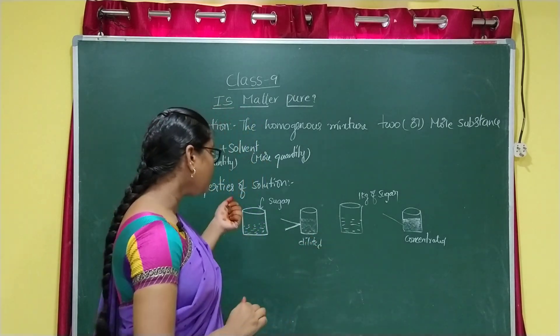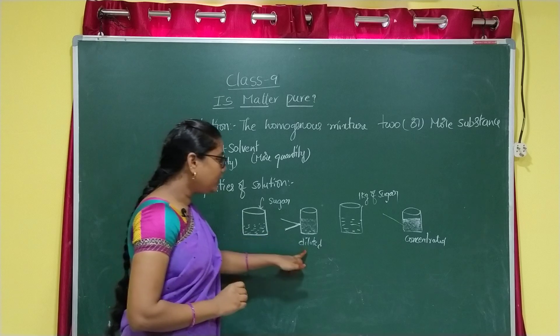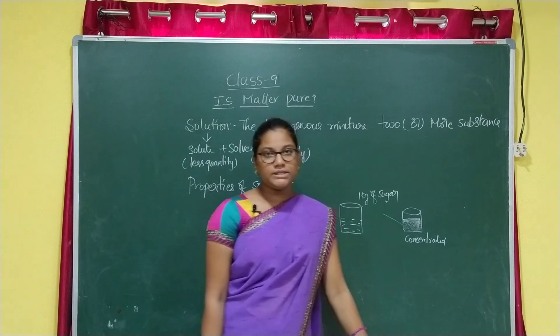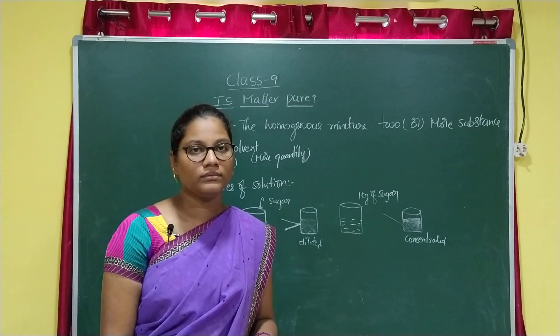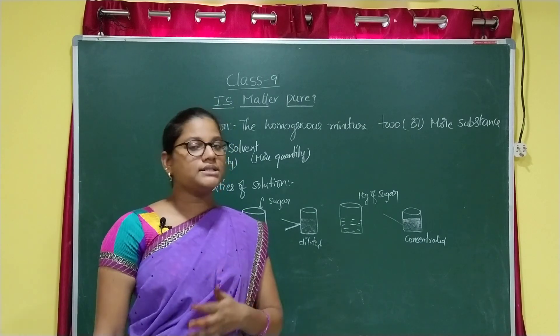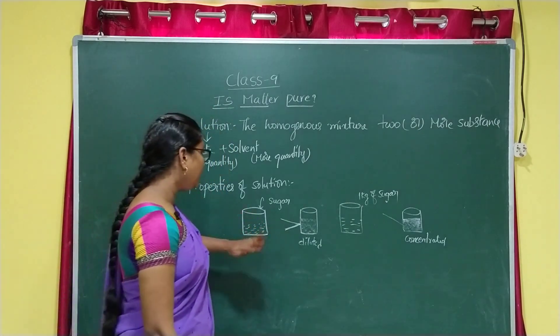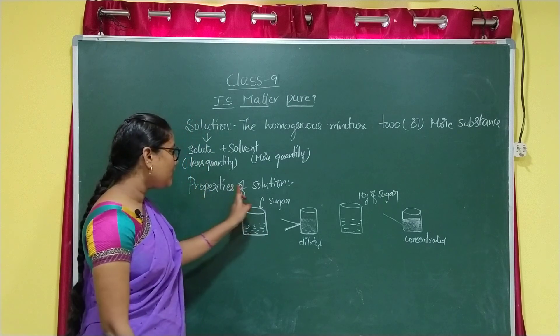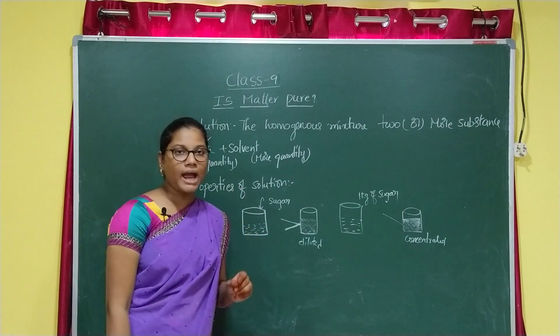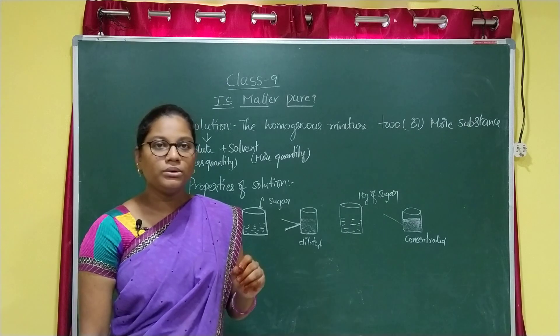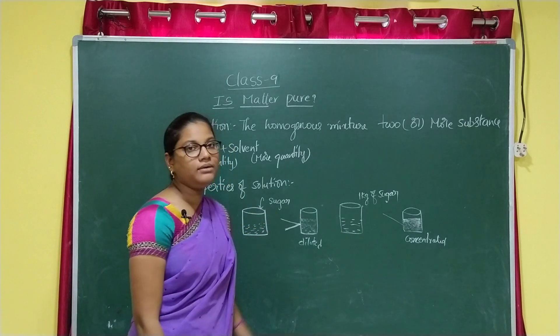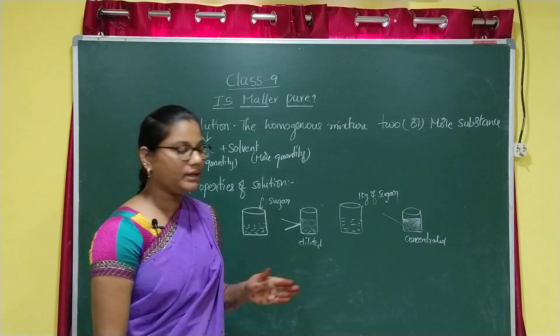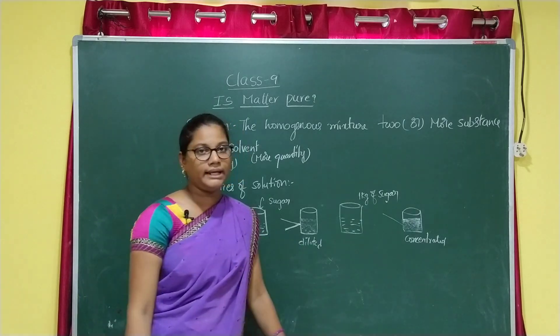What is dilute and what is concentrated? We will discuss in next class. So in this class, the property of solution is: solutions do not scatter a beam of light, and we cannot see the path of light through them.